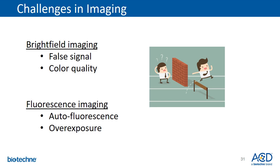Getting good images is essential. Here I will touch upon the challenges in imaging. For bright field imaging, I will discuss false signal and color quality. For fluorescence imaging, I will go over autofluorescence and overexposure problems. These are the main challenges for a microscope user and an image analyst — sometimes we can go around them, and sometimes we have to address them directly.